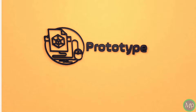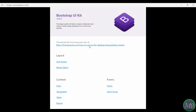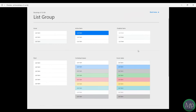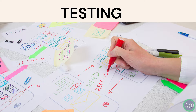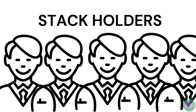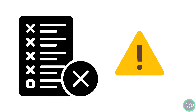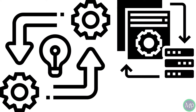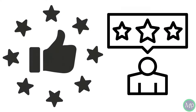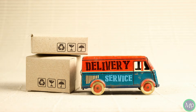Next, prototypes. Prototyping is practically working on the website. Next, testing — we will present the design to stakeholders. Then, we will rectify it until stakeholders are 100% satisfied. This process will be repeated. Next, delivery — we will deliver that product.